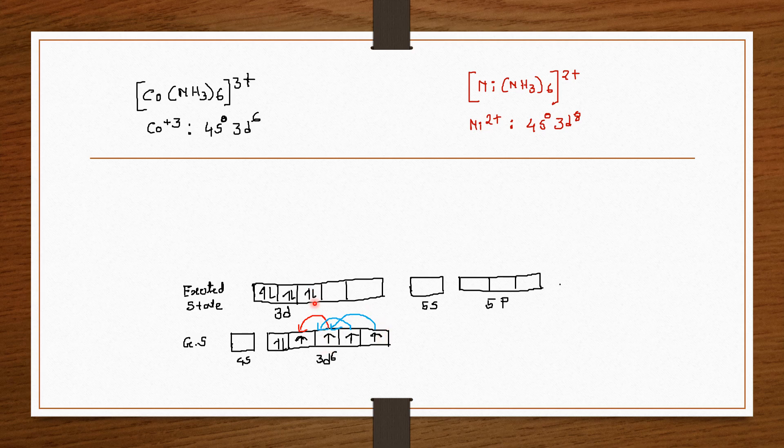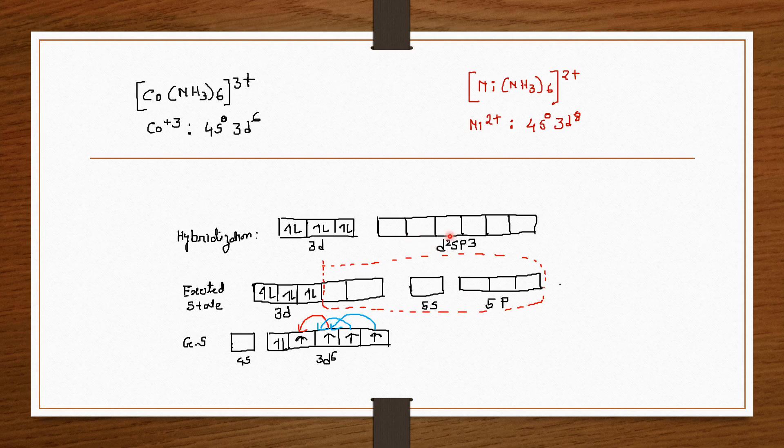In the excited state two 3d orbitals are empty. Now these two 3d orbitals, 4s and 4p orbitals they hybridize and form a new orbital which is called d2sp3. Now d2sp3 orbitals are empty orbitals of cobalt +3.